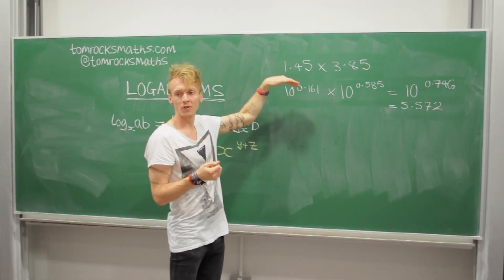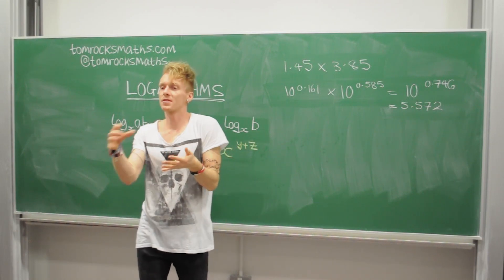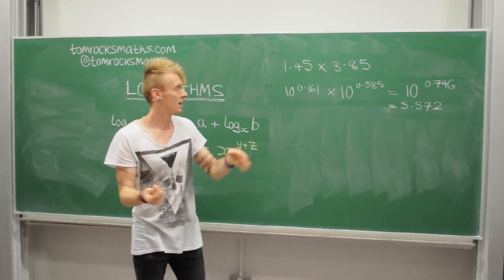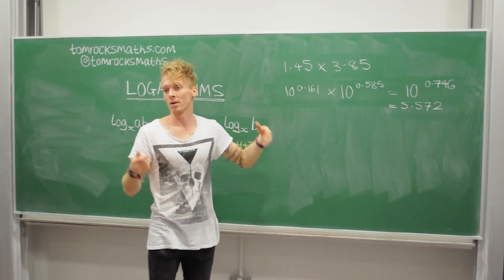So step one, you go, right, 1.45. Look through my book, find what power of 10 equals 1.45. It's 10 to the 0.161. Great.